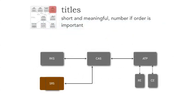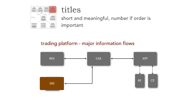Here we have an architecture where we have the RKS system communicating with the CAS system over to the ATP system, which in turn communicates through dotted lines through RE and CE, and of course we have the SRS system. A lot of times as architects, we diagram systems with all this innate knowledge, and the problem is how in the world are you going to interpret any of this? So the first tip is to have a short, meaningful title — for example, 'Trading Platform Major Information Flows.' I can't tell you how many diagrams I've seen without effective titles.